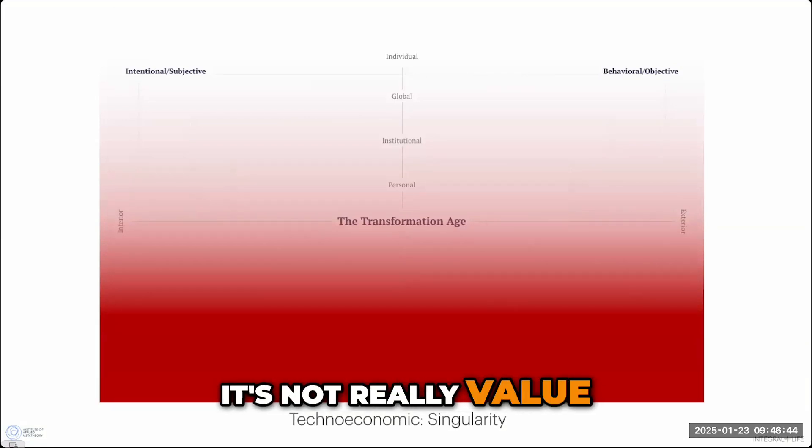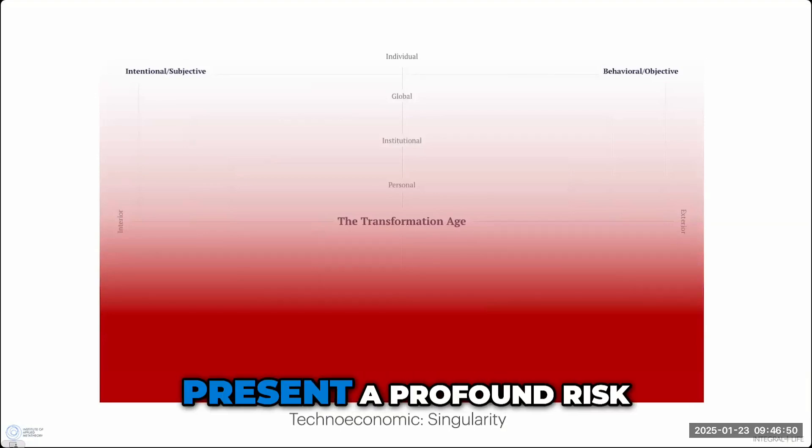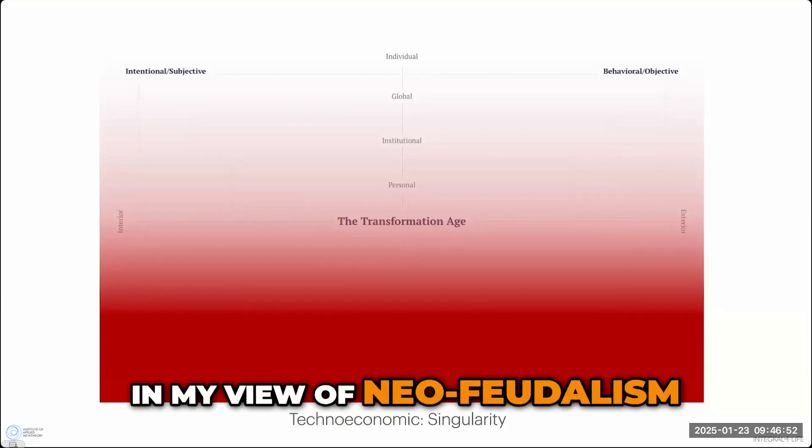And at that point, it's not really value. It's just redistribution. So, AGI is going to present a profound risk, in my view, of neo-feudalism.